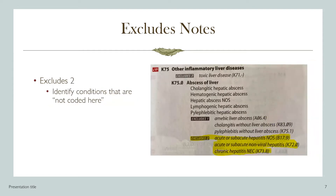An excludes two note identifies conditions that are not included here. This means that if the patient had the condition located under the excludes two note, they should code for that condition elsewhere. If the patient has both the condition within the excludes two note as well as the coded condition, then both codes may be reported together as appropriate. In this example, I have highlighted the excludes two note. Acute or subacute hepatitis not otherwise specified, B17.9, is an option. So the patient could have both an abscess of the liver and unspecified acute or subacute hepatitis, which would be reported with K75.0 and B17.9.